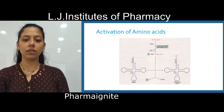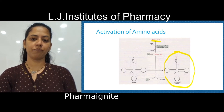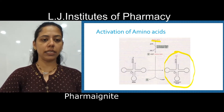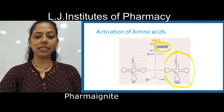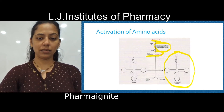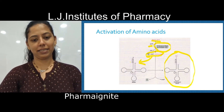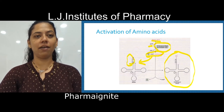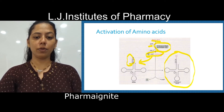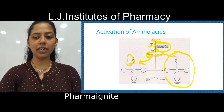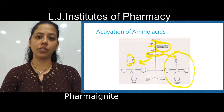Our second step is activation of amino acids — that means how we form aminoacyl-tRNA. The amino acid, with the help of the enzyme aminoacyl-tRNA synthetase, forms a complex with the help of ATP. That complex then reacts with tRNA. The tRNA has a CCA nucleotide sequence at the 3' end, and to that end the amino acid can easily bind, making it ready for the translation process.